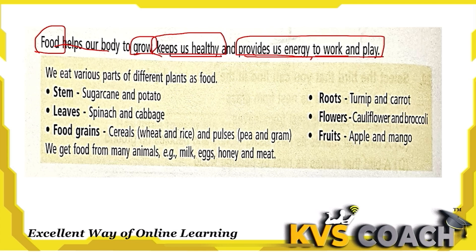We eat different parts of plants as food. First, stems — like sugarcane and potato — and leaves like spinach and cabbage, which are leafy vegetables. Roots like turnip, carrot, and radish are root vegetables. Flowers like cauliflower and broccoli are flower vegetables. Food grains include cereals like wheat and rice, and pulses like peas and grams.